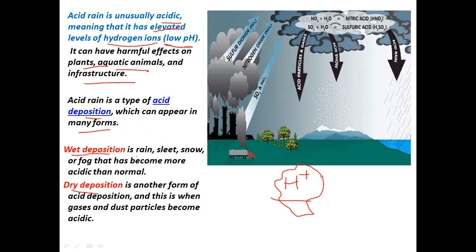Acid rain is a type of acid deposition which can appear in many forms — it can be wet deposition or dry deposition. Wet deposition is rain, sleet, snow, or fog that has become more acidic than normal. Dry deposition is when gases and dust particles become acidic; those acidic dust particles and gases are called dry deposition.